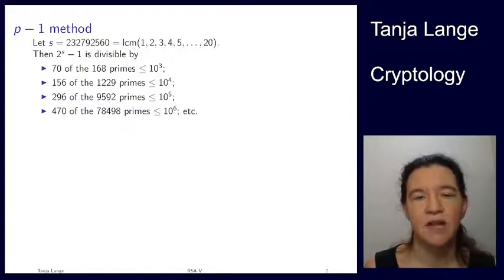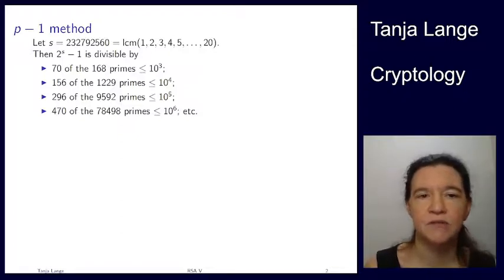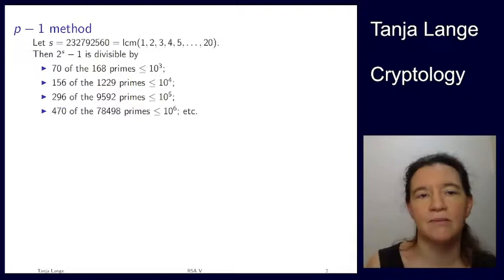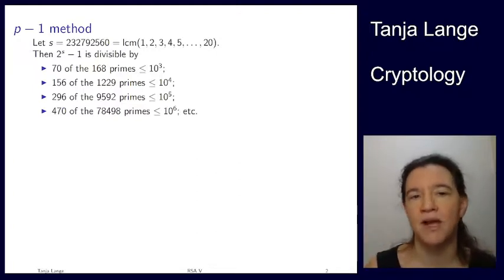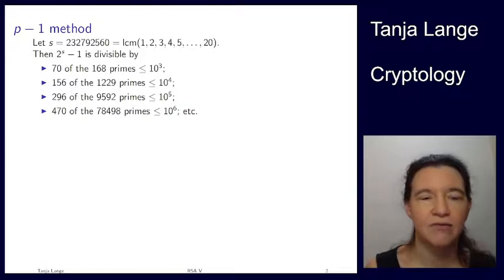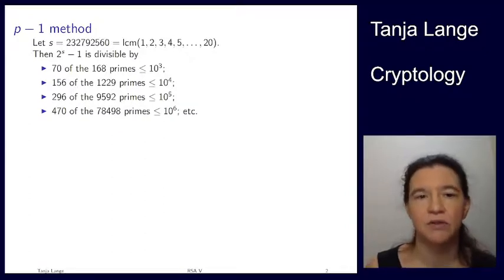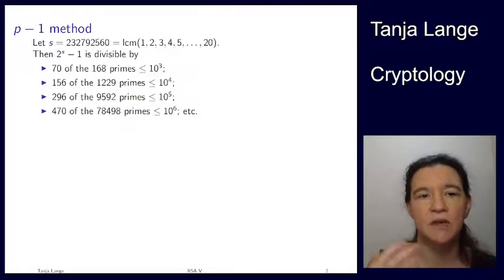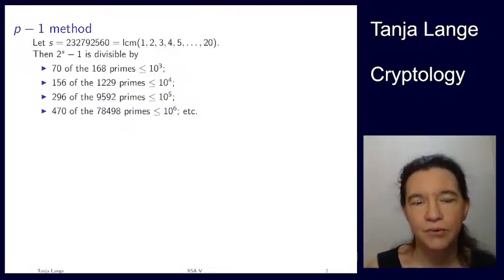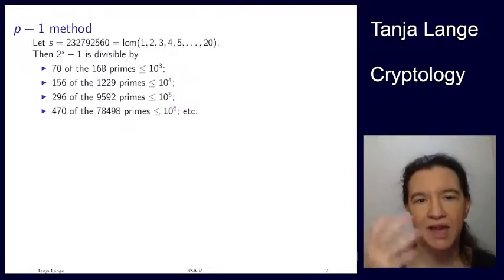Of these 168 primes, 17 are divisors of it — roughly half, slightly less. Looking at the primes up to 10,000, 156 of those divide it. So each time we're getting a bunch of new primes. For the small primes, you're taking a huge number, so finding 2, 3, 5, 7, and so on is not such a surprise. But for the larger primes — up to a million — it's actually surprising that you're seeing about 180 more primes that we hadn't seen before, so really primes between 100,000 and a million.